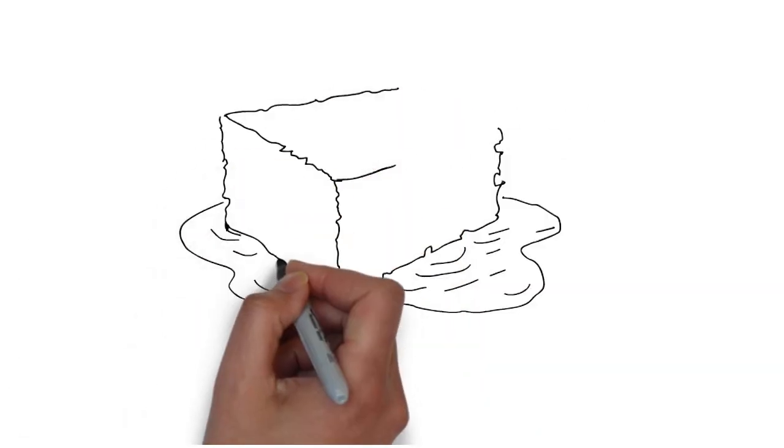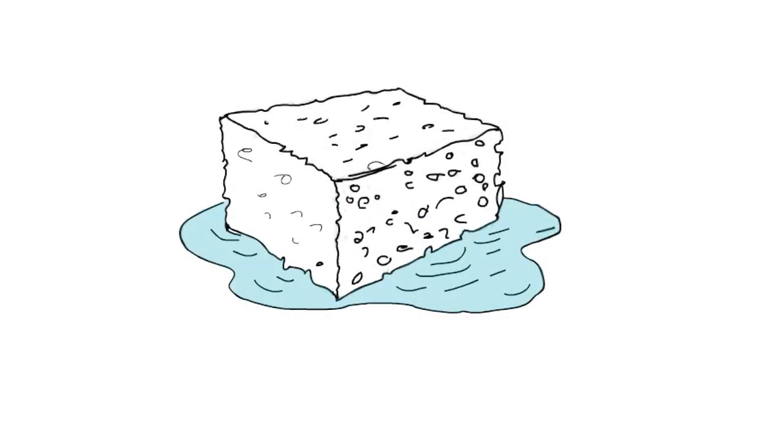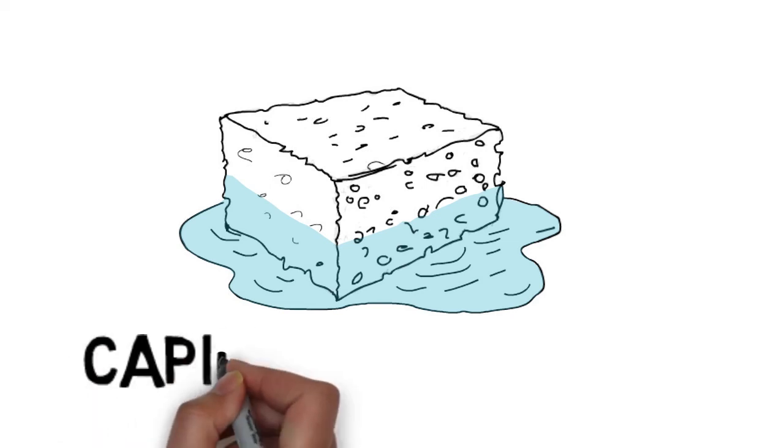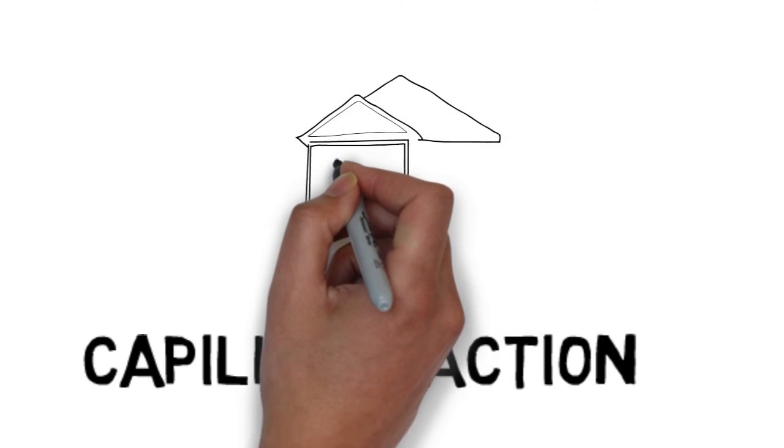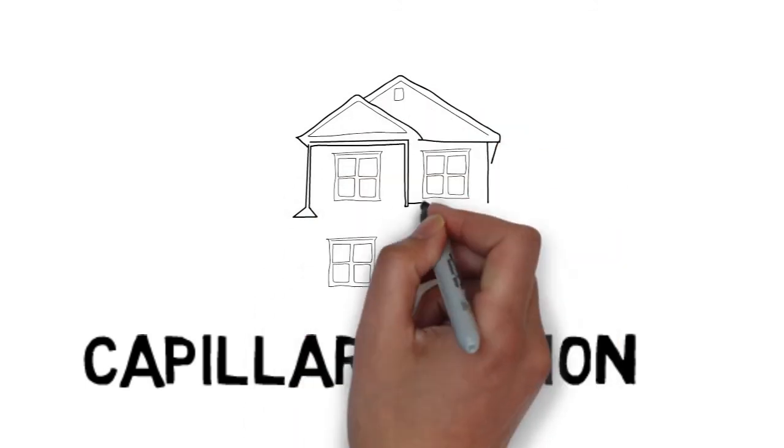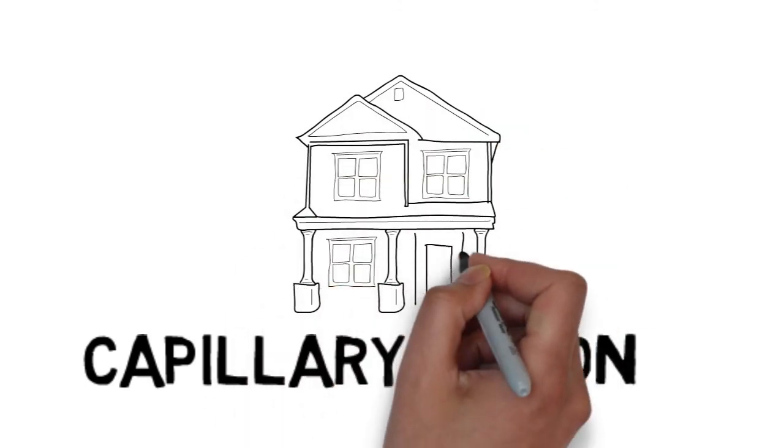You know that your masonry walls are a lot like a sponge. Water is heavier than a sponge, but it will still defy gravity and rise up the sponge. Scientists call this capillary action, and your walls soak up water from the ground just like a sponge, only it normally takes decades.